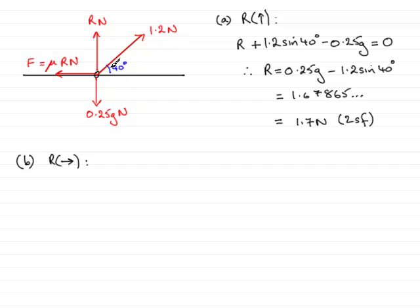Cos 40° because the angle is contained between the force and the direction that we want to go. So we have 1.2 cos 40° as the component of the 1.2 newtons.